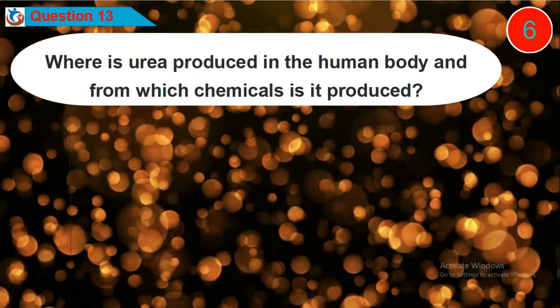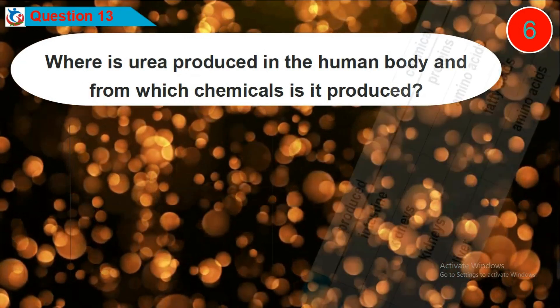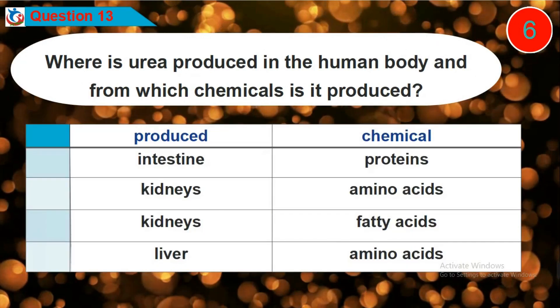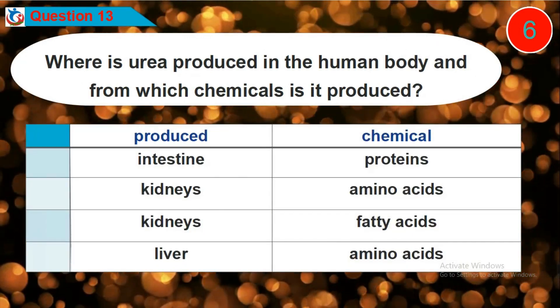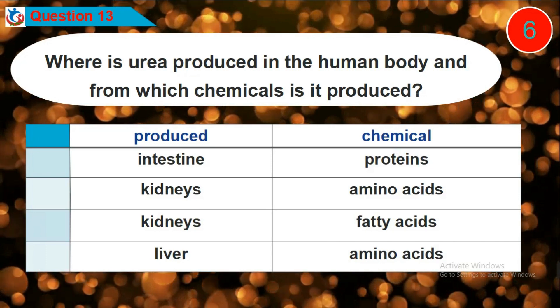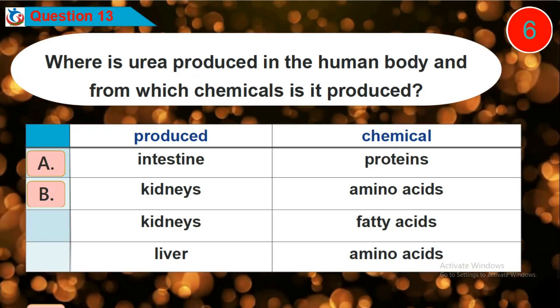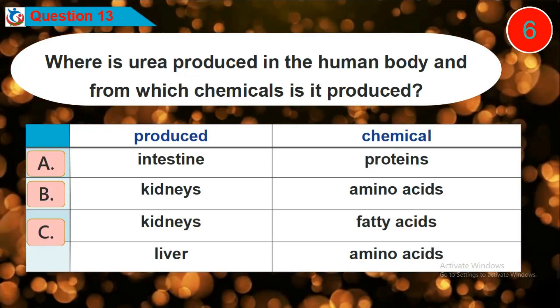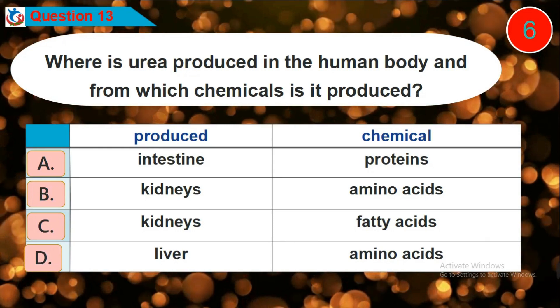Question 13: Where is urea produced in the human body, and from which chemicals is it produced? Is it option A, B, C, or D?